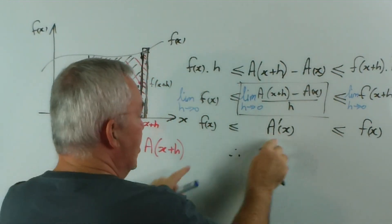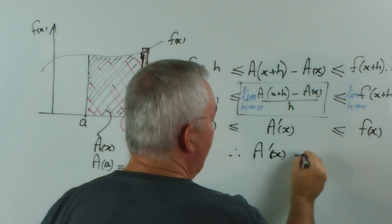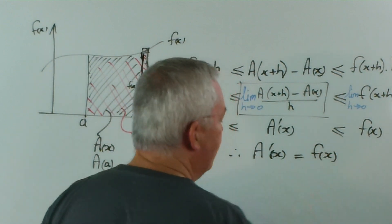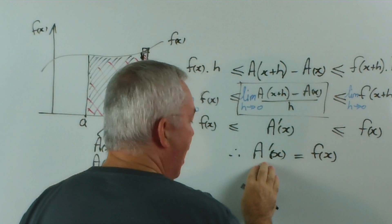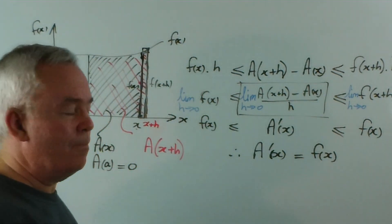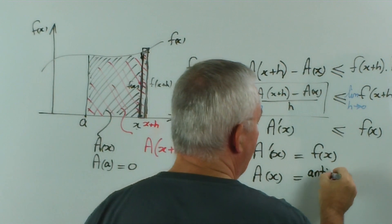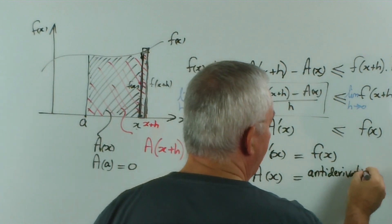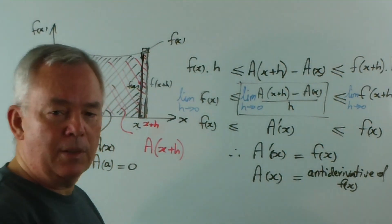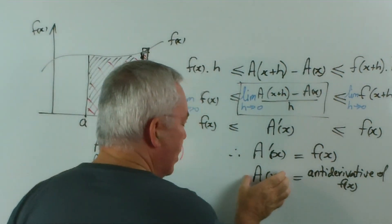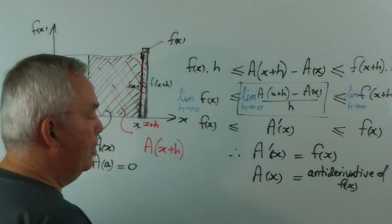So therefore, we conclude that if this lies between two identical things it must be the same as them. Therefore, the derivative of the area-function is the same as the function of the curve. Or, if you like, this is the anti-derivative of f. So let's write that down: A(x) equals the anti-derivative of f. This is the first part of the Fundamental Theorem of Calculus, to see that the area under a curve is the anti-derivative of the function. And there we have connected derivatives and areas.